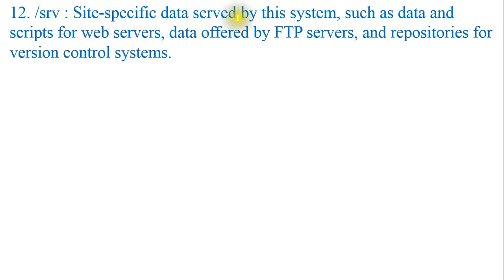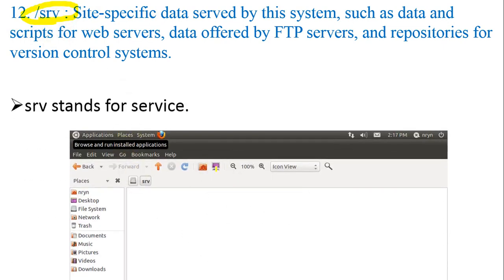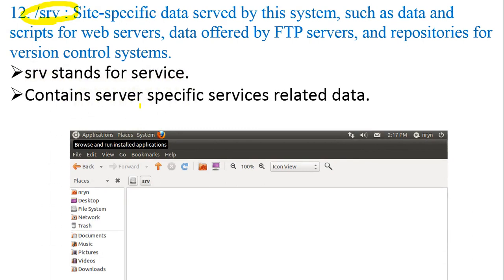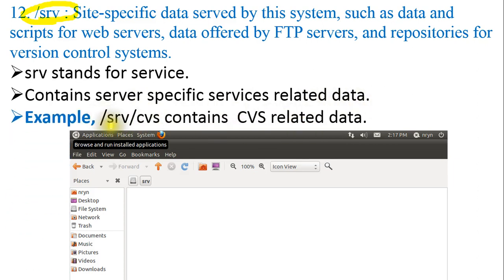Next is /srv — site-specific data served by the system, such as data and scripts for web servers, data offered by FTP servers, and repositories for version control systems. It stands for 'service' and contains server-specific service-related data. For example, /srv/cvs contains CVS-related data. As of now, you will not see anything in this folder on my computer.